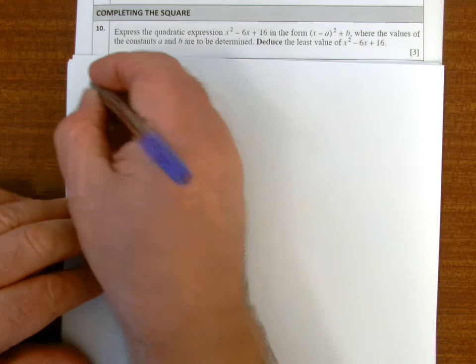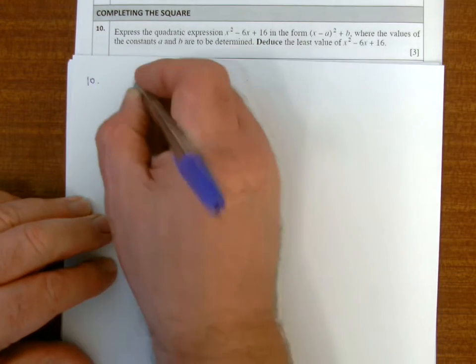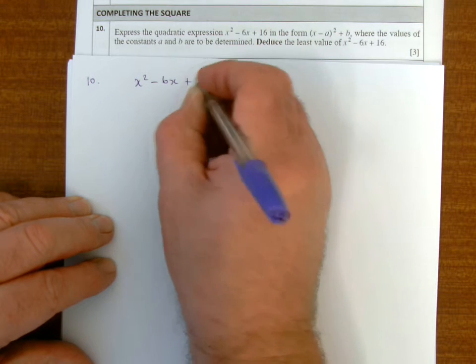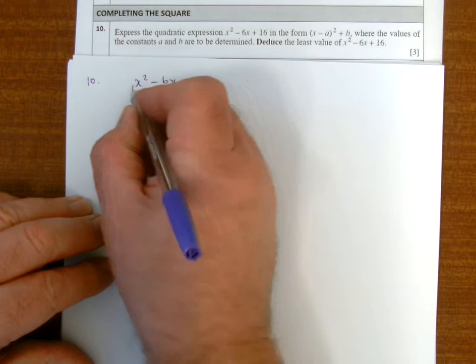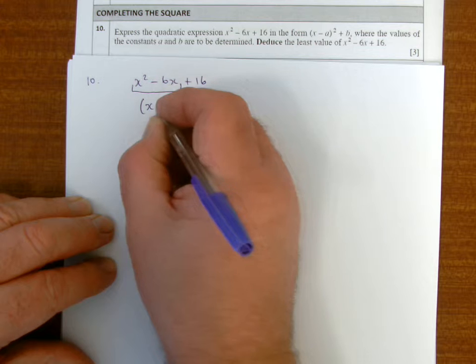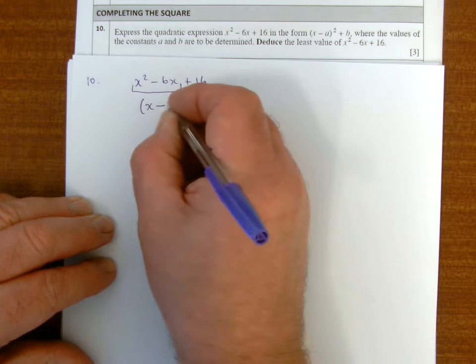To complete the square, I look at the first two terms of this expression, and if that's in a square bracket, it'll be x minus sign there and minus there. If I halve the 6, I get 3.